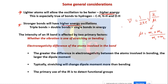From this relation, we can say that higher the mass of the molecule, lower will be the frequency of vibration, because frequency is inversely proportional to the square root of reduced mass. Lighter atoms give higher frequency. Since no atom is lighter than hydrogen, any bond involving hydrogen will vibrate at much higher frequency.